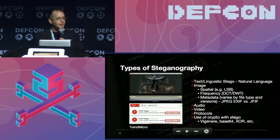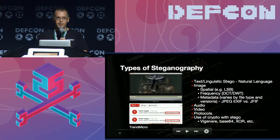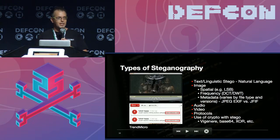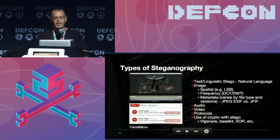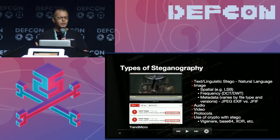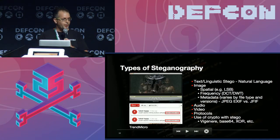From an image standpoint, there are a lot of different methods. For JPEGs, you have EXIF or JFIF metadata at the beginning of the file. Some of that may be present when you take a picture on your smartphone and post it to social — unless they remove it, there could be your location, what phone it was taken from, time and date, and more. That same metadata can be used for hiding data. You can also append beyond the end-of-file marker, or use least significant bit or frequency techniques.